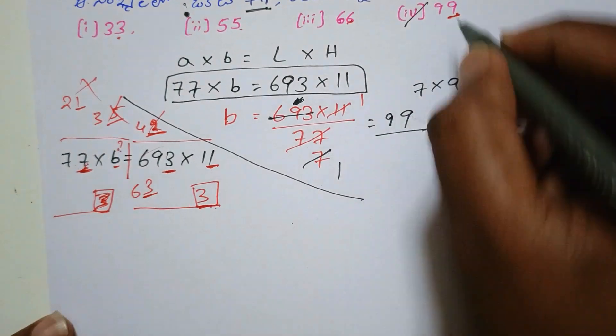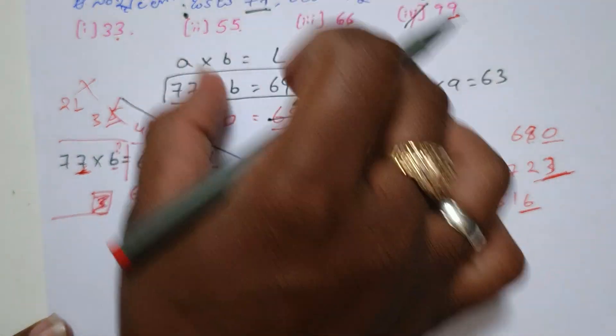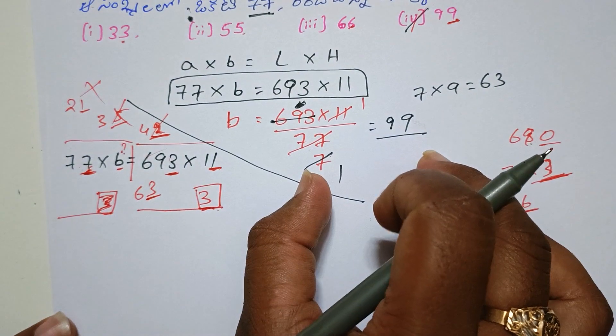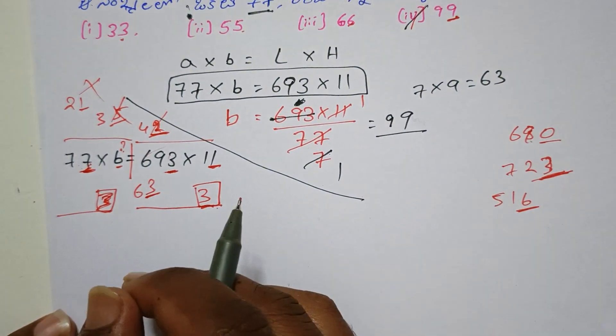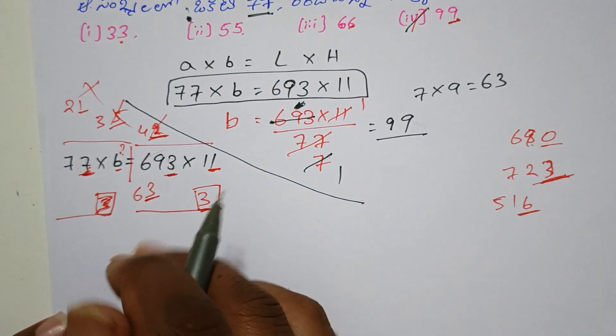This is the correct answer. So if you cancel the answer, you can do the shortcut method.